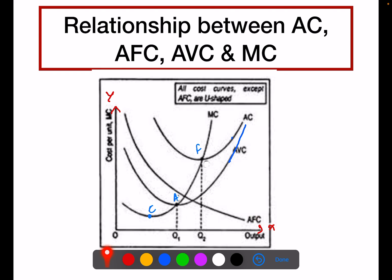Another point in the relationship between AC, AVC and AFC is that the minimum point of AVC, which is point A, is on the left-hand side of the minimum point of AC. Point F is the minimum point of the AC curve and point A is the minimum point of AVC. So point A is to the left of point F, or equivalently, the minimum point of AC (point F) is on the right-hand side of the minimum point of AVC (point A).